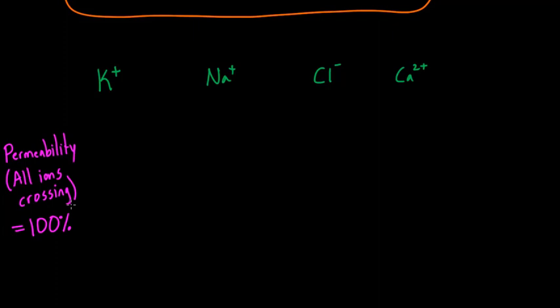I'm just going to make up some quick numbers. Let's say that of the 100%, potassium is 95%, meaning that 95% of all border crossings, if we think about our cell border, cell membrane, 95% of the crossings are with the ion potassium. That means that only 5% of the crossings are with the other three ions.